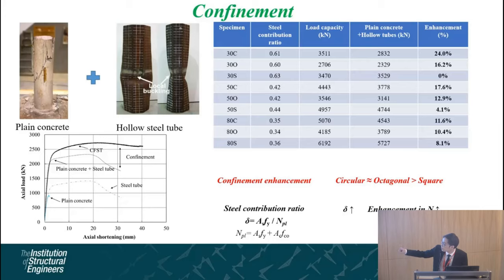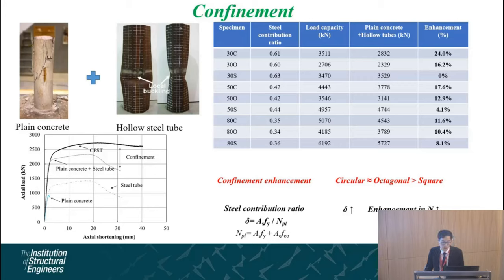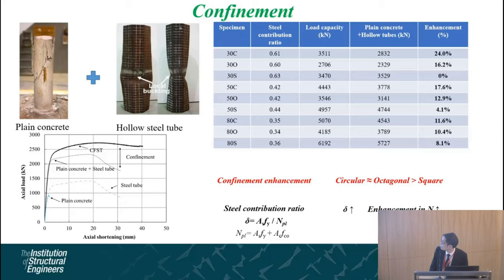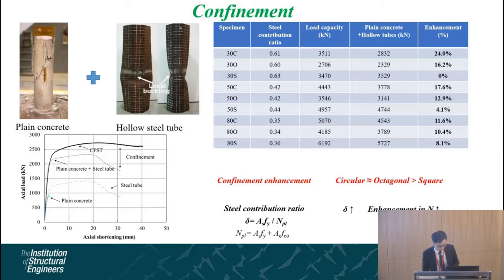To study the confinement effects, we conducted plain concrete column stub column tests with the same dimensions as the concrete core in the concrete-filled steel tubes. We plotted the load-shortening curve and found that the concrete-filled steel tube capacity is much higher than the superposition of the two individual components. The enhancement percentage due to confinement shows that the circular and octagonal sections have very similar confinement percentages, both better than the square section. Increasing the steel contribution ratio leads to better enhancement.